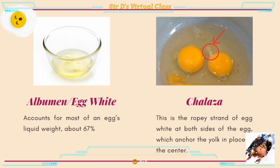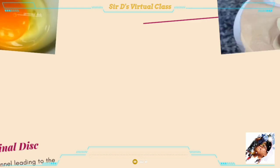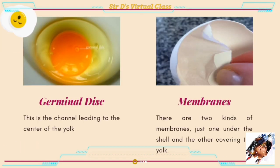The chalaza is the ropey strand of egg white on both sides of the egg which anchors the yolk in place. The germinal disc is the channel leading to the center of the yolk. There are two kinds of membranes: one just under the shell and the other covering the yolk.